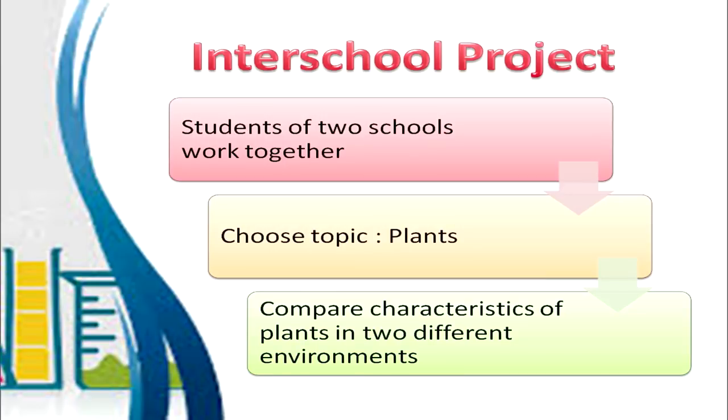The next type of learning under the constructivist approach is collaborative learning. Consider an example: an inter-school project on plants, where students from two or three schools work together. They choose the topic of plants and compare the characteristics of plants in two different environments — for example, if one school is in North India and the other in South India, the plants differ because climatic conditions are different. The students compare plant characteristics in these two regions and come up with a project. This type of approach is known as a collaborative approach.